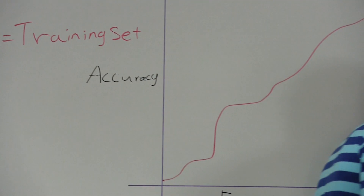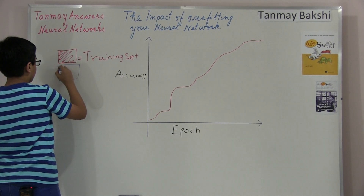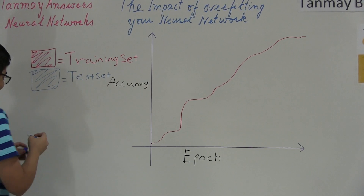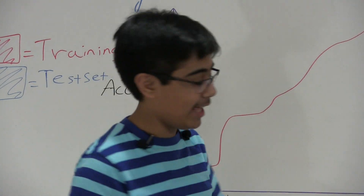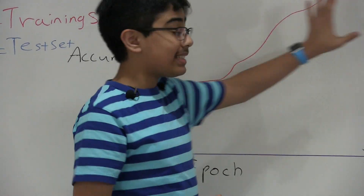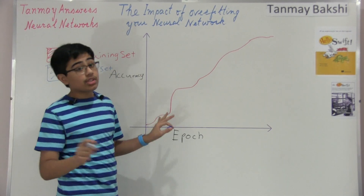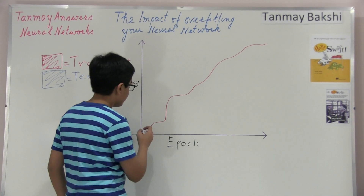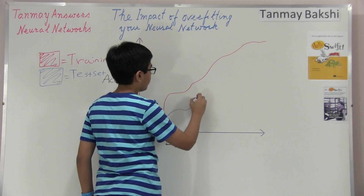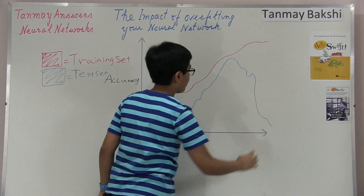Now let's say we were also to plot out the accuracy of not just our training set, but our test set as well. As it's very commonly said in the neural networks world, you should always have a test set. We start off almost at the training set accuracy and of course start to go up — and then we slowly start to sync.